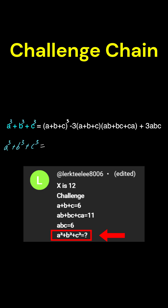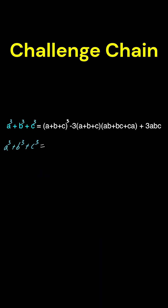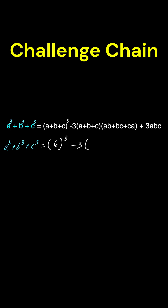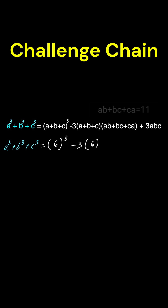Since we were asked for the sum of cubes, we can use a special case of Newton's identities known as a symmetric sum of cubes identity. Right over here is the formula. Lee gives us some pieces of information in his comment. He tells us that a plus b plus c equals 6, so right over here we can go 6 and cube that. And a plus b plus c is also 6.